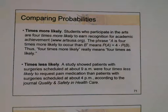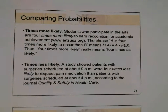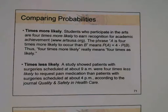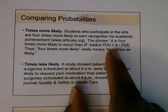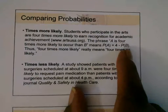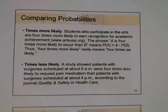'Times more likely' means this, and here is a situation where it is used: students who participate in the arts are four times more likely to earn recognition for academic achievement. The phrase 'A is four times more likely to occur than B' means: the probability of event A equals four times the probability of event B occurring. Thus, four times more likely really means four times as likely.